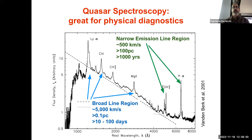This is a composite spectrum constructed from spectra of many hundreds of quasars in the Sloan Digital Sky Survey. You can see lines from the optical straight through to Lyman alpha in the ultraviolet.